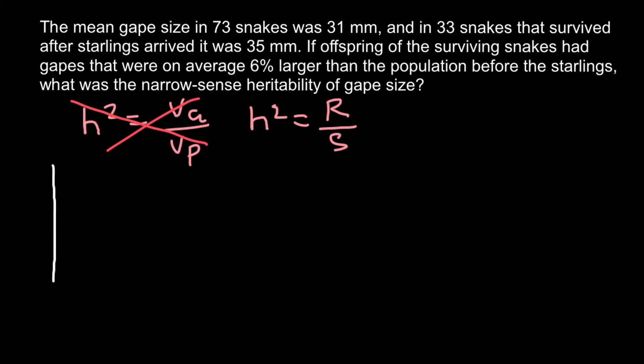So imagine that 73 snakes don't have the same size of 31 millimeter. This is average. So some of them is less than that, some of them more than that. But average would be 31 millimeter and how this trait or any other trait is usually distributed.